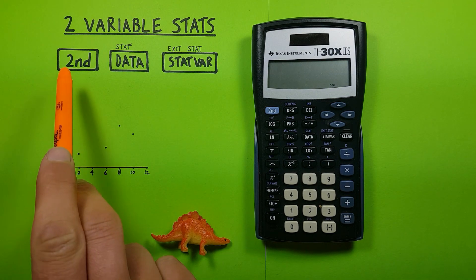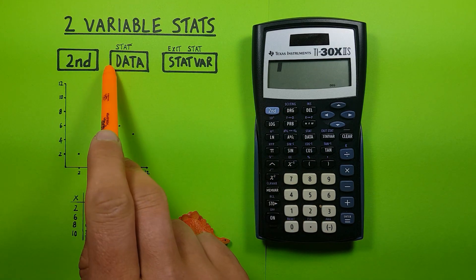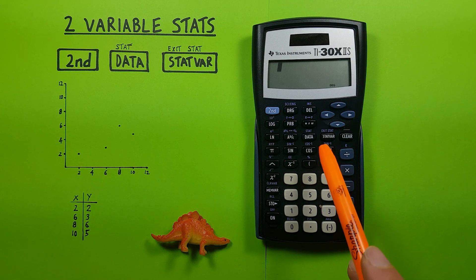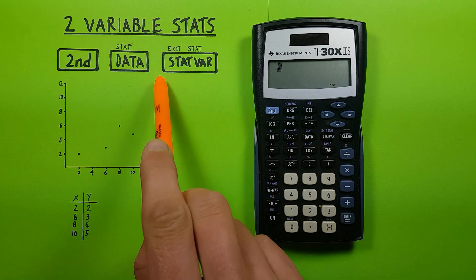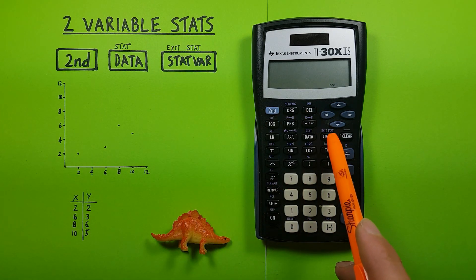To do this we'll be using the second function key located here, the data key with the second function of stat located here, as well as the stat var exit stat key located here.